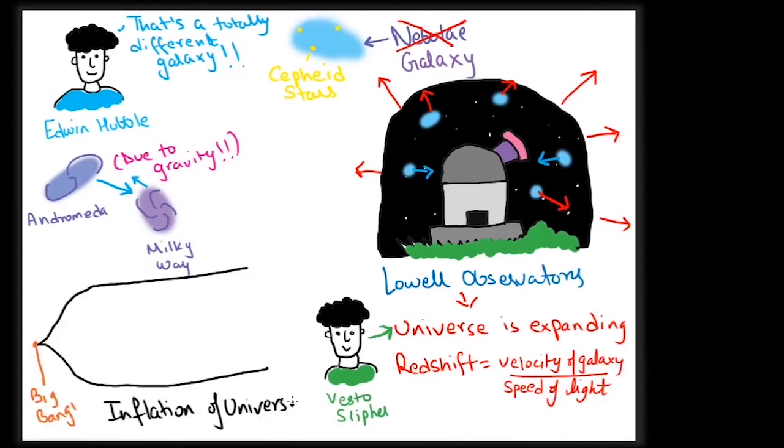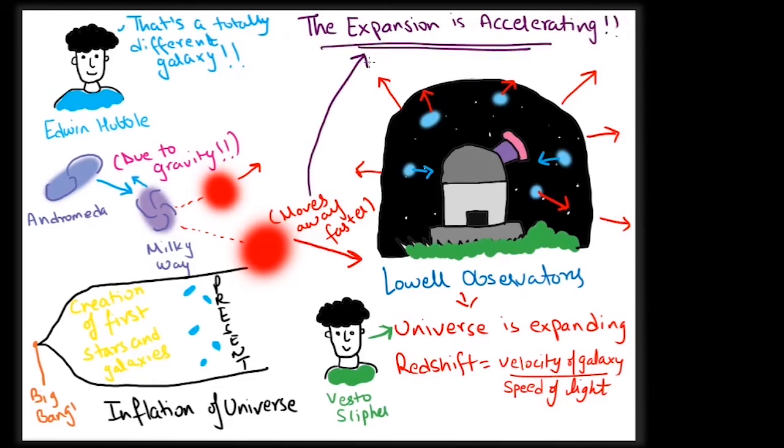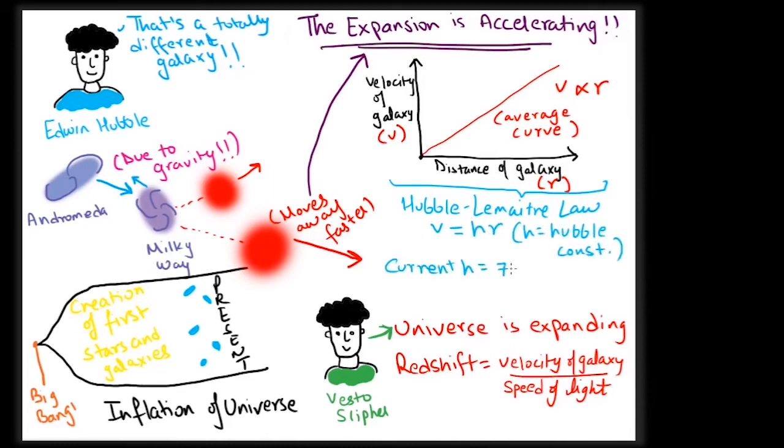What Hubble found out was actually groundbreaking and laid the seeds for inflation: that the farther a particular galaxy was, the faster it appeared to move away from us. Hence, the universe was not just expanding at a constant speed but in fact accelerating. This relation of velocity of galaxies and their distance is called the Hubble-Lemaitre law. According to the current value of Hubble's constant, the velocity of galaxies increases 70 kilometers per second per megaparsec. One parsec is equal to 3.26 light years. The Andromeda galaxy, currently 2.5 million light years away from us, is going to merge with the Milky Way in 4.5 billion years.